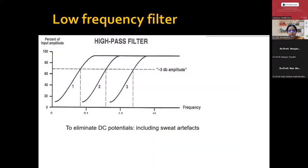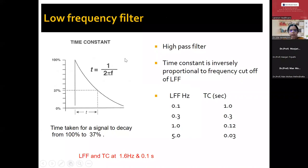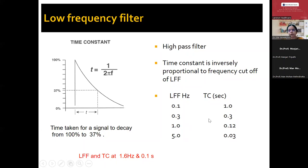The second is the low frequency filter, which is important to eliminate direct current potentials — especially sweat artifacts. The low frequency filter is also known as the high-pass filter. There is an important relationship between time constant and the low frequency filter in the EEG machine — both are inversely proportional. The time constant is inversely proportional to the frequency cutoff of the low frequency filter. Normally we keep the low frequency filter with a time constant of 0.1. Time constant is the time taken for a signal to decay from 100% to one third — that is, 37%.